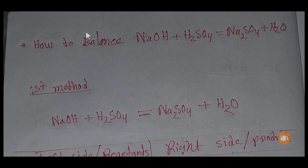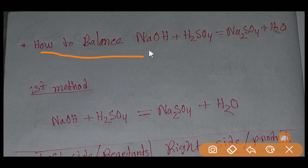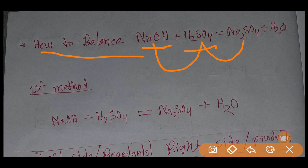Hello everyone, today we are going to learn how to balance the sodium hydroxide and sulfuric acid reaction. Sodium hydroxide reacts with sulfuric acid and we get sodium sulfate and water. We'll balance this reaction by two ways.